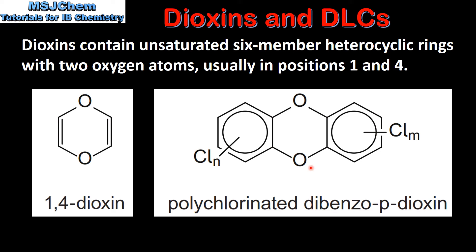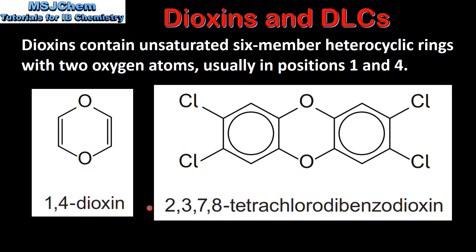Once again we can see the 2 oxygen atoms in the molecule. And here we can see a specific example of a PCDD which is 2378-tetrachlorodibenzodioxin. As well as having the 2 oxygen atoms we also have 4 chlorine atoms bonded to 2 benzene rings.